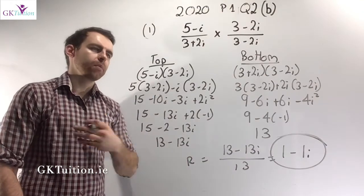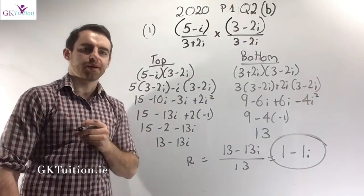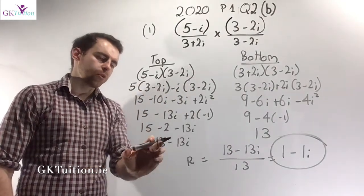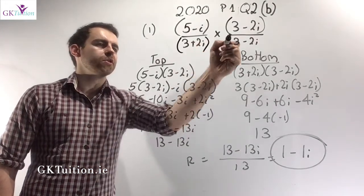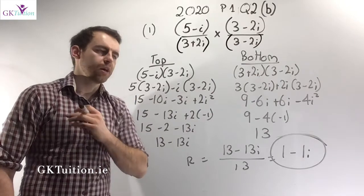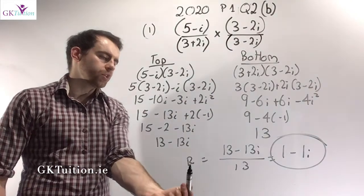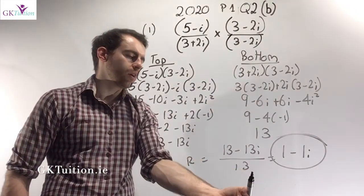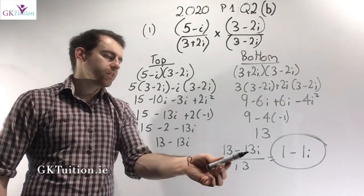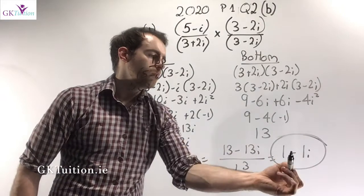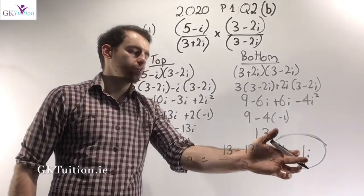On the top, I multiply 5 minus i by 3 minus 2i, and I get 13 minus 13i. On the bottom, I multiply 3 plus 2i by 3 minus 2i, and I get 13. The common ratio is 13 minus 13i over 13. 13 divides into itself once, and 13 divides into minus 13i giving minus i. So the common ratio for this geometric series is 1 minus i.